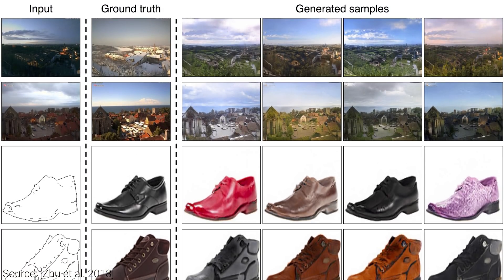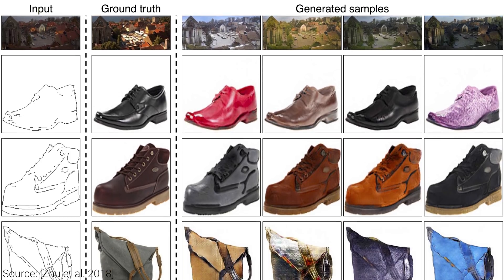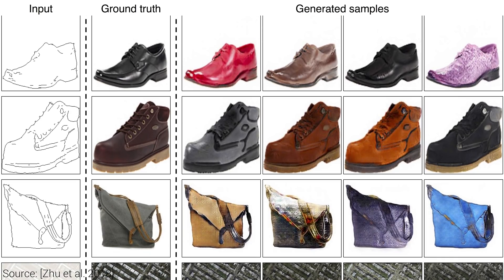What I found to be really cool about the next comparisons is that the ground truth images are also attached for reference. If we can take a photograph of a city at night time, we have access to the same view during the daytime too, or we can take a photograph of a shoe and draw the outline of it by hand. As you can see here, there are not only lots of high quality outputs, but in some cases the ground truth image is really well approximated by the algorithm.